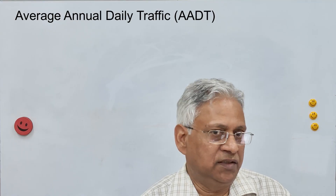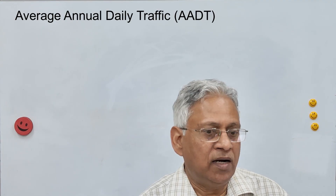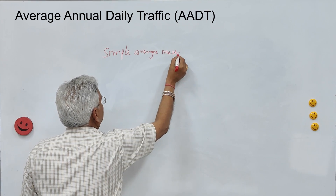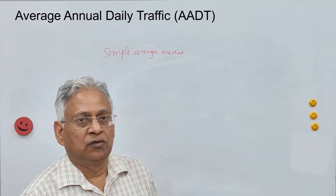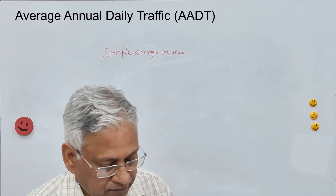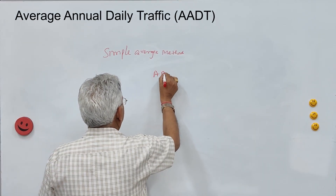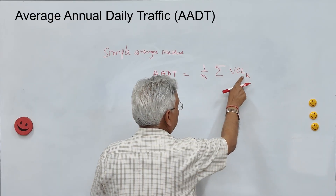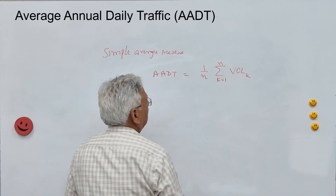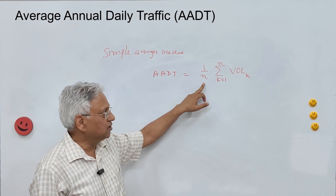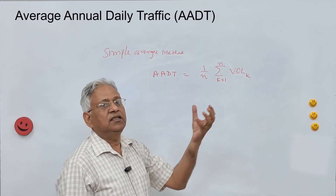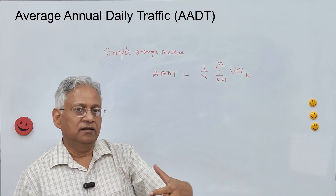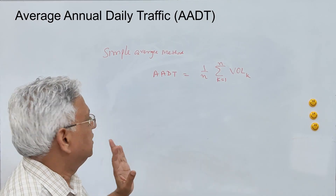There are two methods of calculating AADT. One is the simple average method, which is adopted in many studies. This method requires the volume count on each day of the year. AADT is given by the equation: (1/N) × summation of VOLk, where VOLk is the traffic volume on the road for the Kth day of the year, K is from 1 to N, and N is 365 or 366. The average of all 365 or 366 values is the AADT — that is the simple average method.